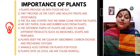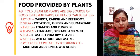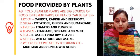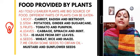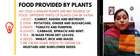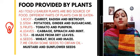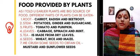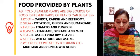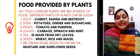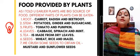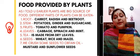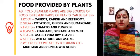The third point in this chapter is food provided by plants. Plants are a big source of food. Different parts of a plant can be eaten. Roots are a really important part of a plant — we eat some roots such as carrot, radish, beetroot, etc. Now comes the stem — we eat stems of some plants, such as potatoes, ginger, and sugar cane.